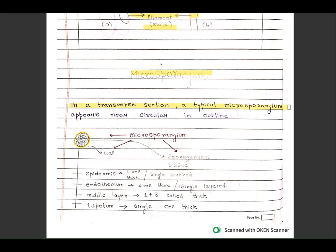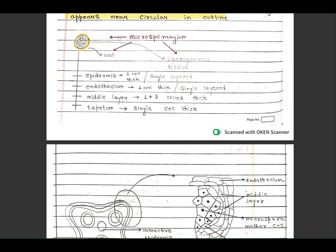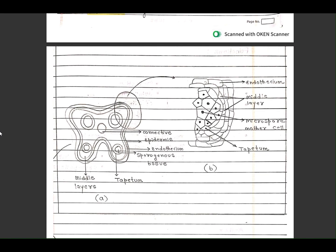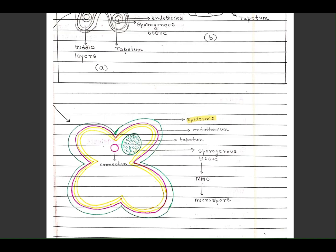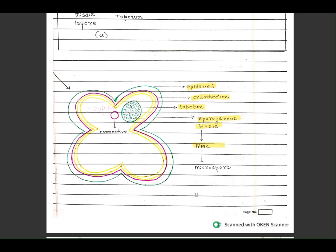In transverse section, a typical microsporangium appears nearly circular in outline. Microsporangium has four layers: epidermis, endothecium, middle layer, and tapetum. Epidermis is one cell thick single layer, endothecium is one cell thick single layer, middle layer is 1 to 3 cells thick, tapetum is single cell thick layer. You can see here the epidermis outer, endothecium is inner, tapetum, sporogenous tissue, microsporangium mother cell, and microspore.